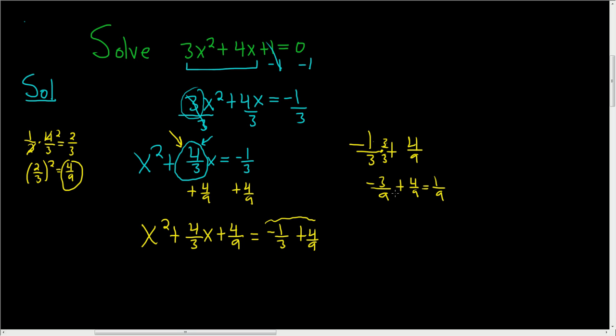Let's go ahead and rewrite everything one more time. So x squared plus 4 thirds x plus 4 ninths. And we added these up already, and we said it was equal to 1 ninth. Alright, now we're going to factor.